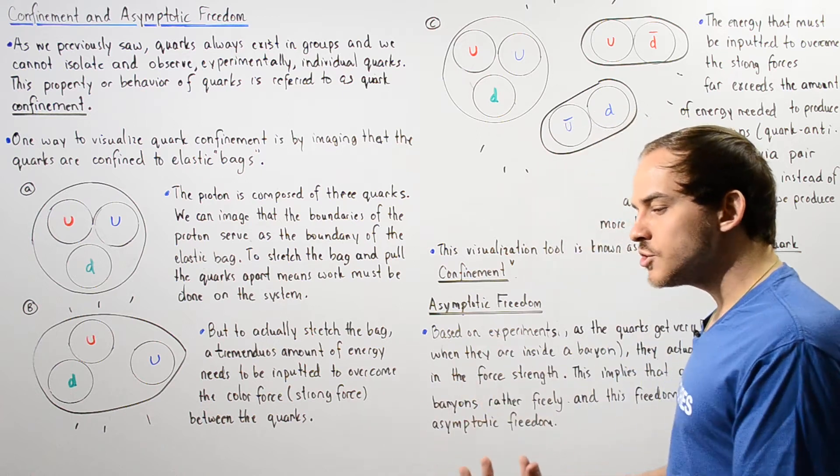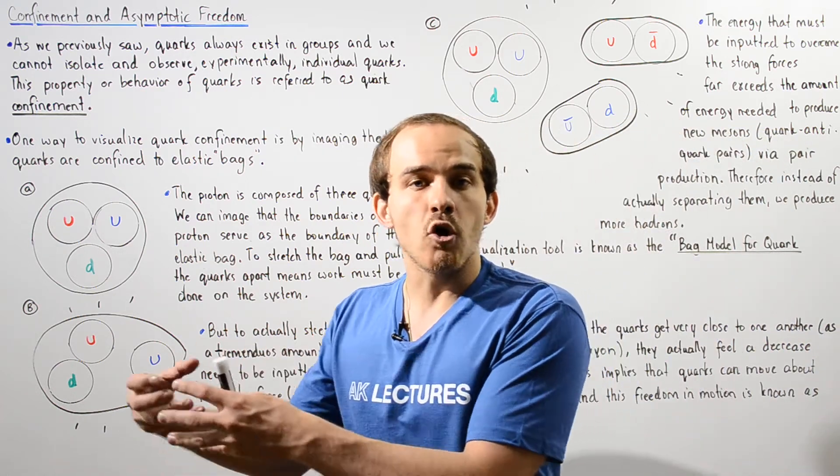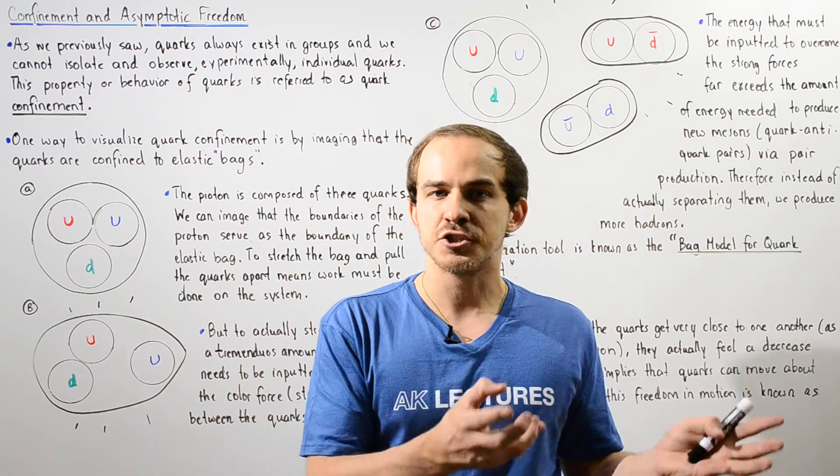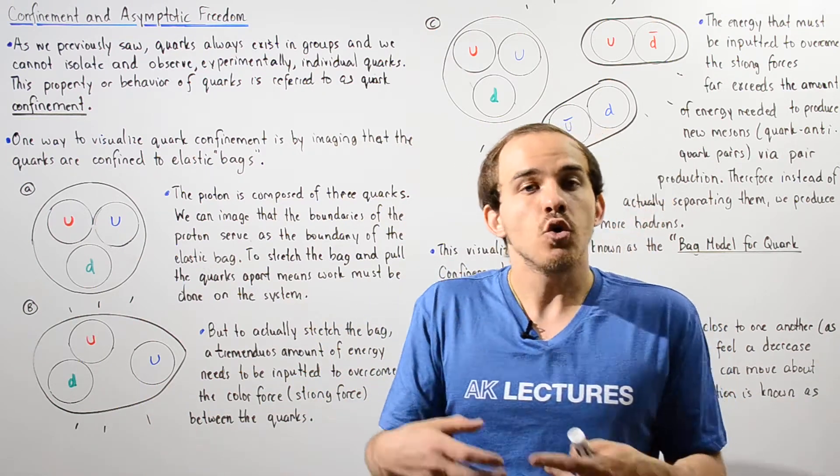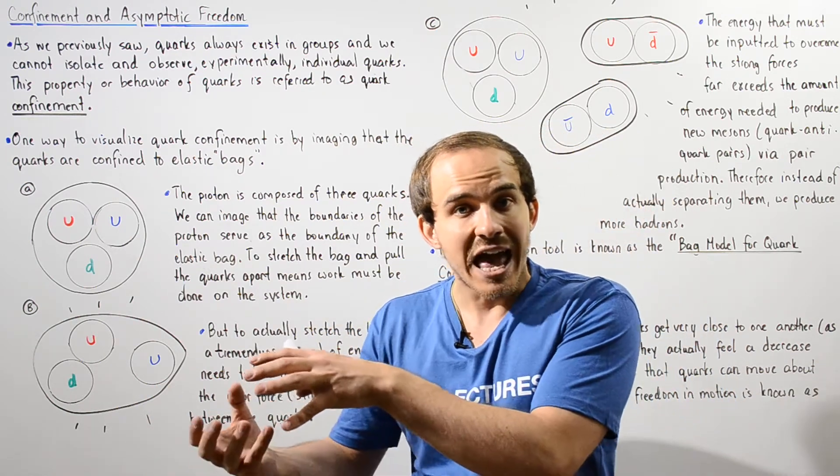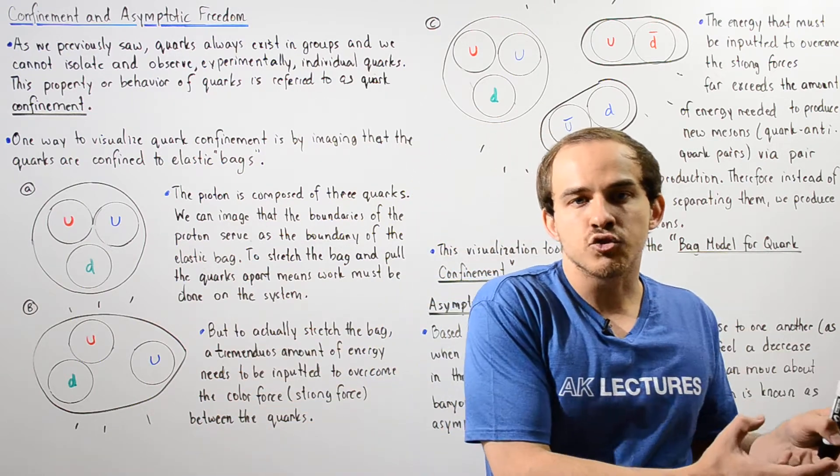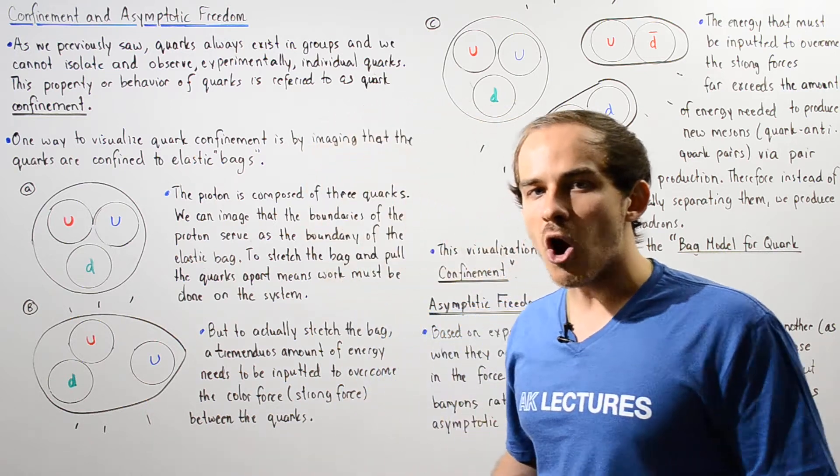Remember, pair production is basically using energy to transform energy via Einstein's mass-energy equivalence principle, converting energy into mass. We can actually use energy, and if we have a great amount of energy, we can transform that energy into forming new mass, new particles.